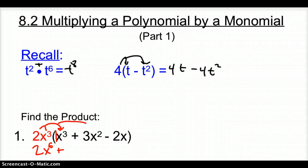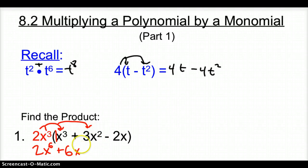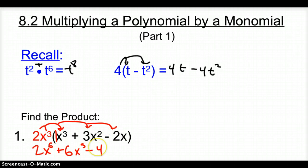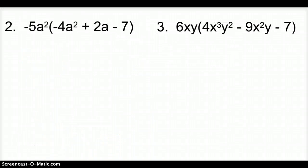Then I take that 2x cubed times everything inside: the 2 times 3 is 6, and be very careful — x cubed times x squared is x to the 5th. When we multiply variables, we add the exponents. And finally, make sure that's a negative sign: negative 4, because 2 times 2 is 4, and we add up the exponents to get x to the 4th.